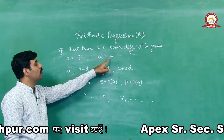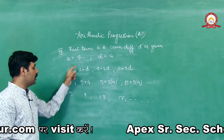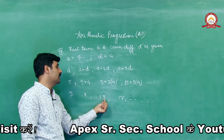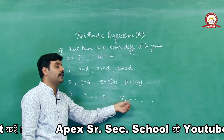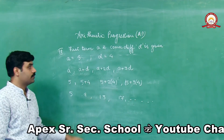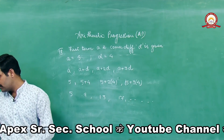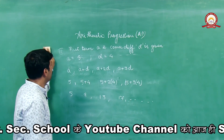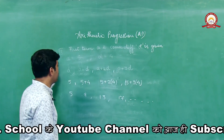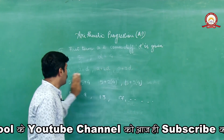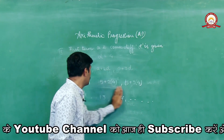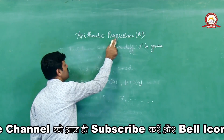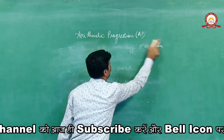तो common difference और first term given था, तो required AP हो जाएगी: 5, 9, 13, 17 and so on। Difference positive given था, तो AP increasing order की है। First term negative भी हो सकती है और difference negative भी हो सकता है।